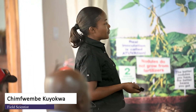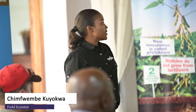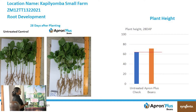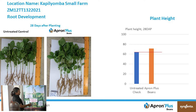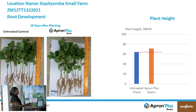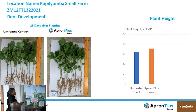Another parameter is root development. We all know that if roots are properly established they'll be able to take up nutrients from the soil. The root biomass was higher in the treated plot — you can see from these roots that they were longer than in the untreated. We also took plant height: in the untreated, plant height went up to about 62 centimeters, while with Apron Plus Beans, the plant height was almost 70 centimeters. This shows there was a delay in germination in the untreated, affecting both plant height and root biomass.